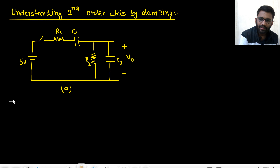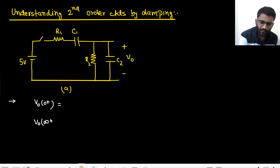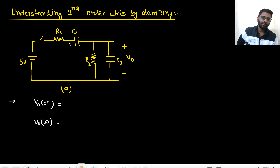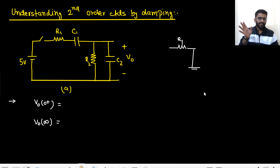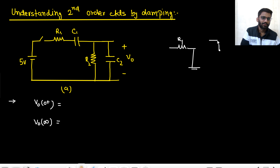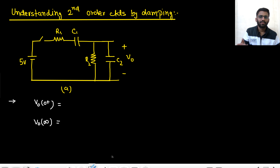Now I need to check the value of V0 at t=0+ and at t=infinity. At t=0+, both capacitors will be shorted. There is no condition of infinite current, no unknown node voltage, and no open-ended node. So simply your V0 will be 0 volt.